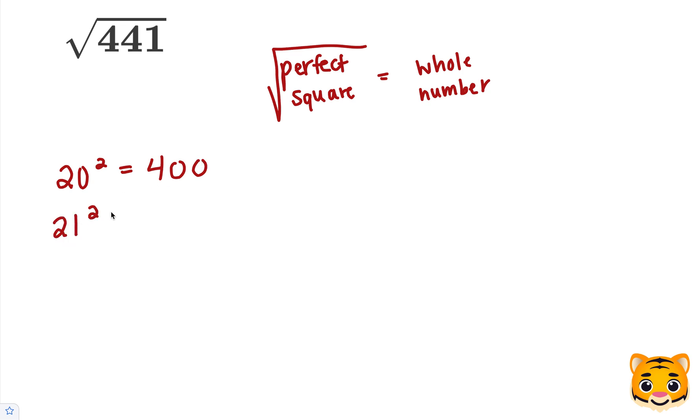Now let's try 21 squared. Let's multiply out 21 times 21. 1 times 1 is 1. 2 times 1 is 2. Add our 0. 1 times 2 is 2 and 2 times 2 is 4. When we add these together we get 441.